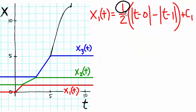Notice that this one matches the slope of the line segment portion of x1 of t, and these constants match the t values of the vertices.